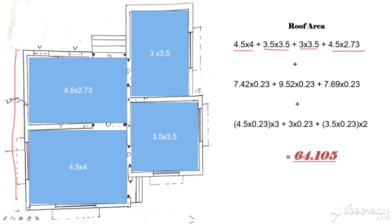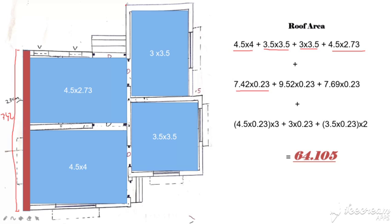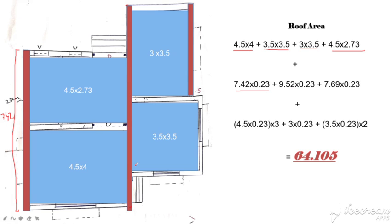I am going to calculate it: 0.23 plus 2.73 plus 0.23 plus 4 plus 0.23, so we get the answer 7.42. Then 7.42 into 0.23. We also get 9.52 into 0.23. We get 7.42 throughout the area.